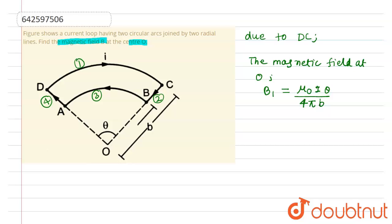Due to CB, the magnetic field at O will be B₂, which is zero, because the current flowing in the wire is along the point O, so there is no perpendicular distance.